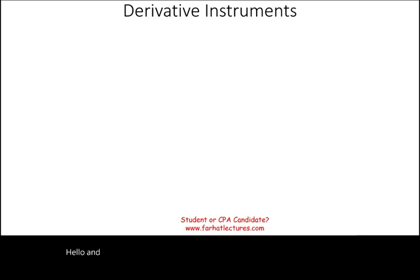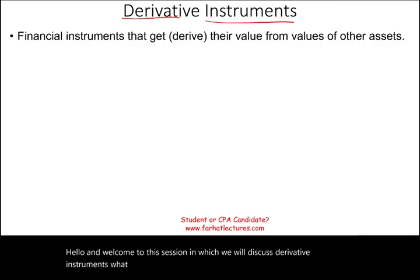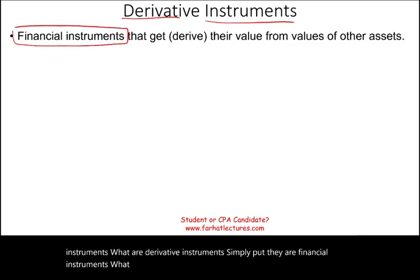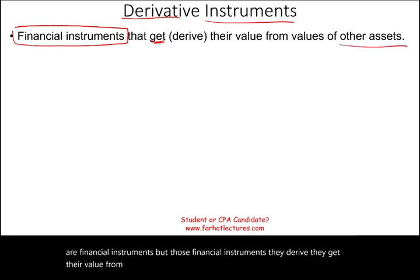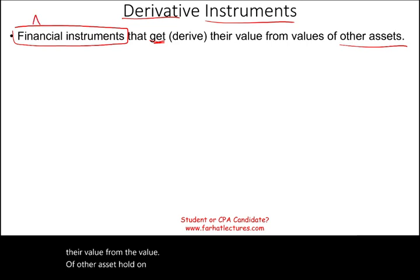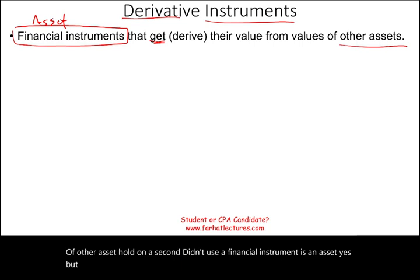Hello and welcome to the session in which we will discuss derivative instruments. What are derivative instruments? Simply put, they are financial instruments — like stocks, bonds, and commodities — but they derive their value from the value of other assets. So yes, a derivative instrument is an asset, but it gets its value from other assets.